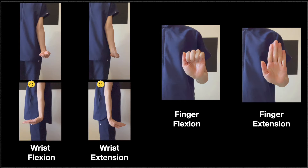Now let's talk about joint movements and the terminology. Wrist flexion is a bending of the hand where the palm faces towards the back of the forearm. This is shown from the front view and the side view.